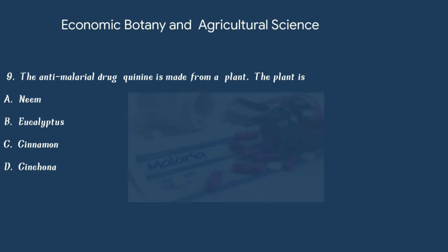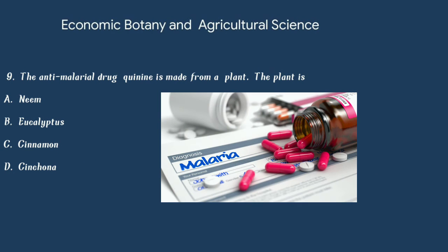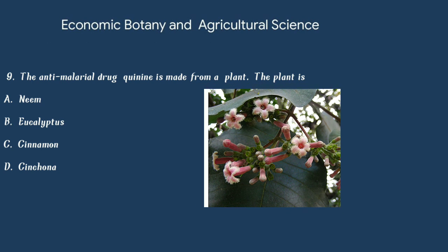Question number 9. The anti-malarial drug, quinine, is made from a plant. The plant is option A: Neem. Option B: Eucalyptus. Option C: Cinnamon. Or option D: Cinchona. The answer is option D: Cinchona.